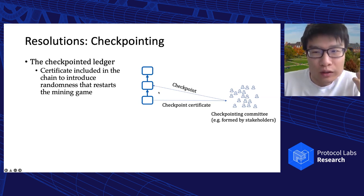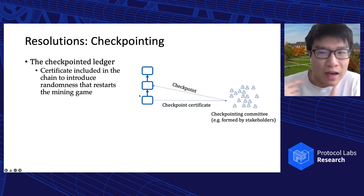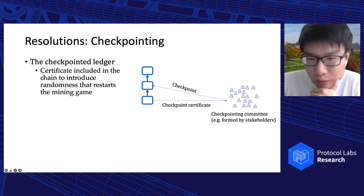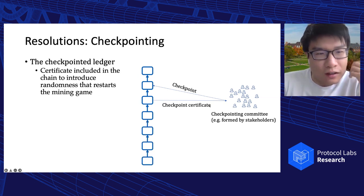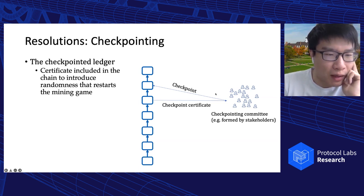The checkpointing committee provides checkpoint certificates to the miners. The checkpointed ledger requires that the checkpoint certificate must be included in the chain to introduce extra randomness that restarts the mining game. In this way, pre-mined private blocks by the adversary become invalid because they did not acknowledge the checkpoint certificates. Therefore, in the checkpointed ledger, there will always be liveness, even if the honest miners control less than 50% of the mining power.